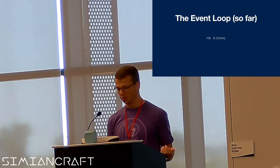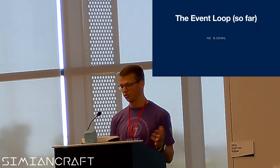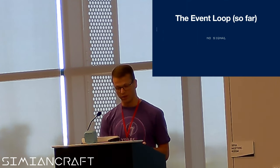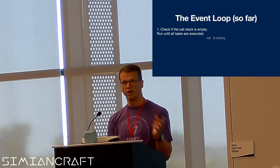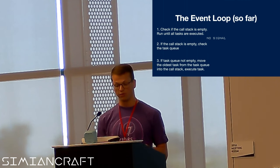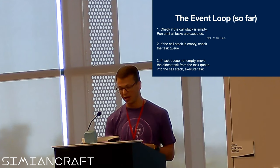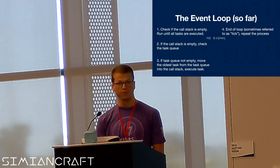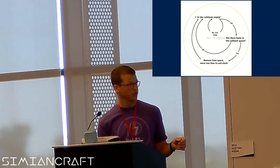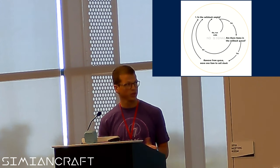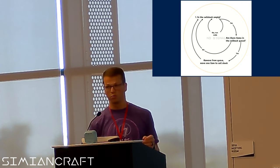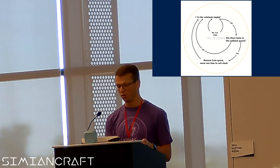Let's talk about the event loop and its role. We can think about the event loop as a big while-true loop in JavaScript. One: we check if the call stack is empty and run until all tasks are executed. Two: if the call stack is empty, we check the task queue. Three: if the task queue is not empty, we move the oldest task from the task queue into the call stack and execute it as normal. Four: we end the loop — sometimes called a tick — and repeat the process.